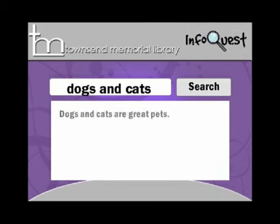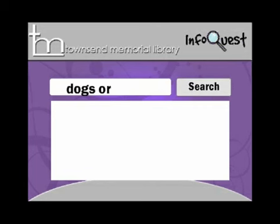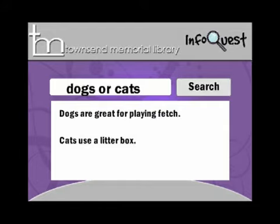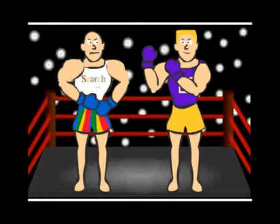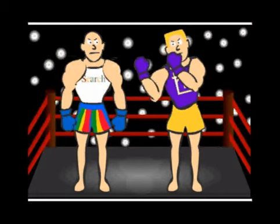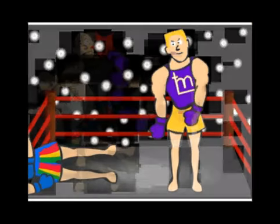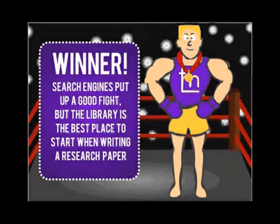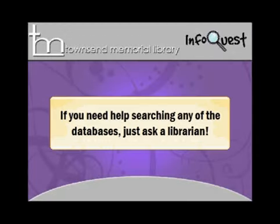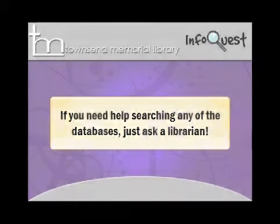If you search for "dogs and cats," you will get both terms together. If you search for "dogs or cats," you will get each term separately. Although the web is good for some things, the library is hands down the winner when it comes to starting your research paper. Don't be overwhelmed with the library — help is available. Just ask a librarian.